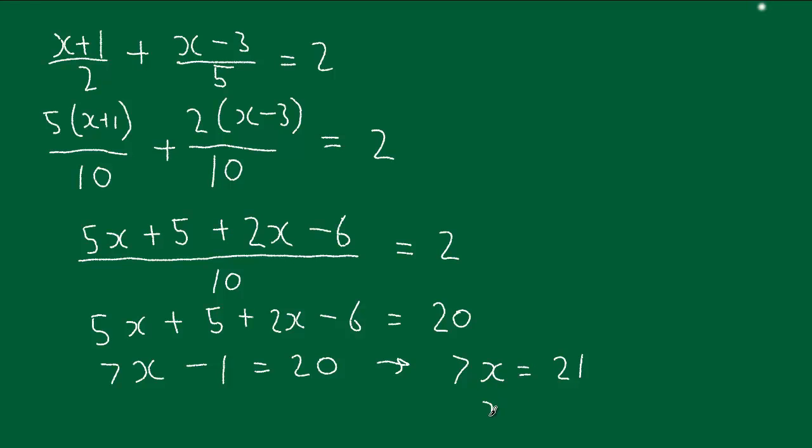I think you can see what x is. x equals 21 divided by 7, which equals 3. That's our answer.